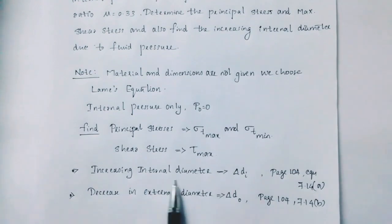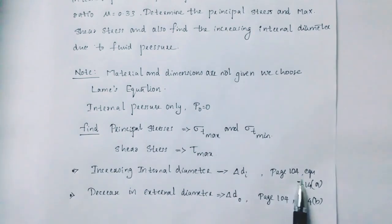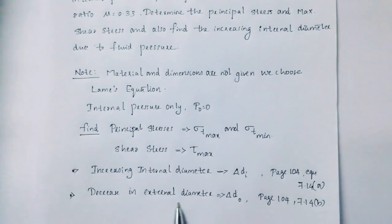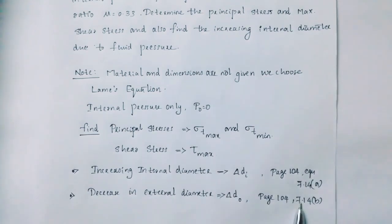Here is the increasing internal diameter delta DI, that is page number 104 equation 7.14a. Decrease in external diameter delta D note, page number 104 equation 7.14b.